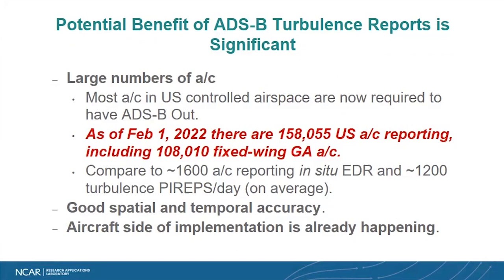The really big benefit is the large number of available aircraft. Most aircraft in U.S. controlled airspace are required to have ADS-B out. As of February 1st, almost 160,000 U.S. aircraft were reporting, including 108,000 fixed-wing GA — compare that to about 1,600 aircraft reporting in-situ EDR and only about 1,200 turbulence PIREPs per day on average. There's also very good spatial and temporal accuracy, and since the aircraft side is already implemented, making use of that data is almost a free benefit.